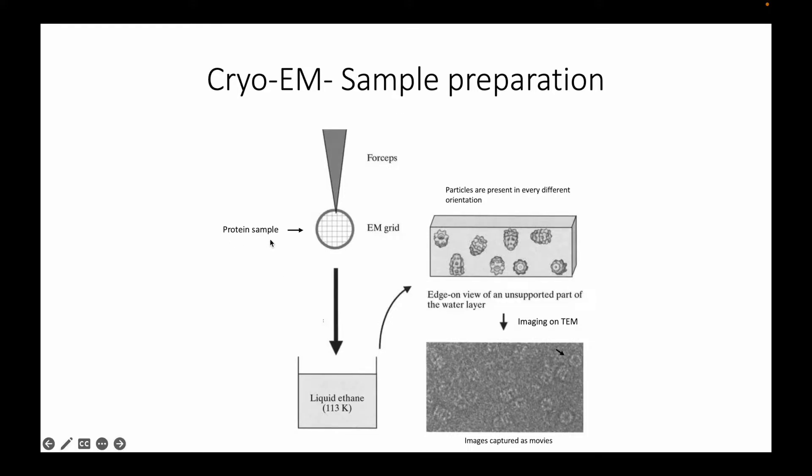What we do is we add the protein sample onto the EM grid and then once you add it to the EM grid then you vitrify the sample in liquid ethane. The idea of vitrification is that we can preserve the sample in a glass-like state which is very important in cryo-EM because we need to minimize the formation of ice because ice crystals can damage or denature your protein. After vitrification you get this glass-like state in which the protein molecules are in all the different orientations.